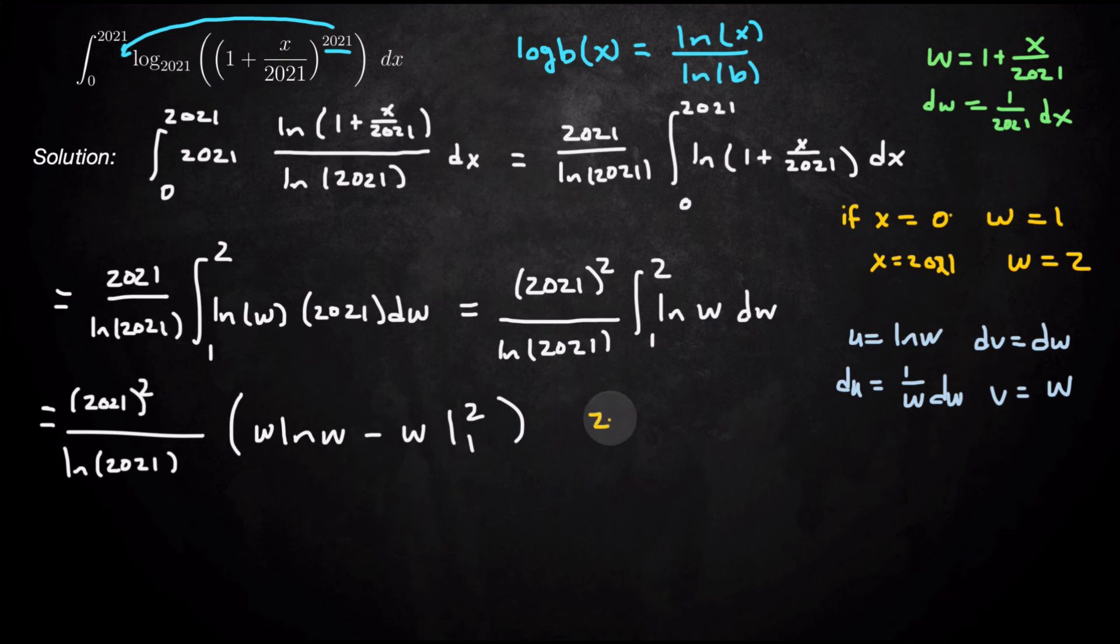That's going to be 2 natural log of 2 minus 2 minus 1 natural log of 1. Will that be minus 0 plus 1? So really, it's just 2 natural log of 2 minus 1. So this answer ends up being 2021 squared over the natural log of 2021 times 2 natural log of 2 minus 2 minus 1.